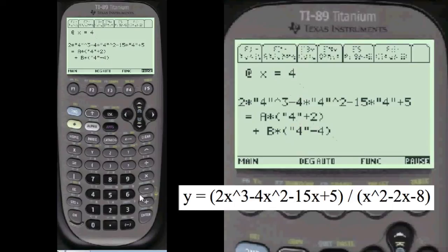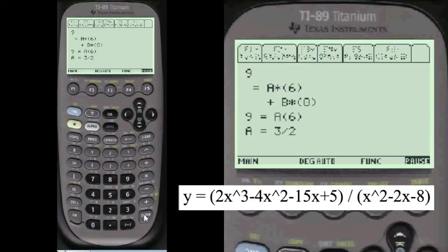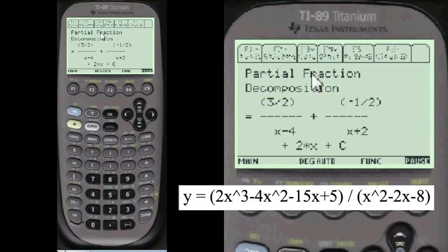And x equals 4. I do that for you. Amazing program, I think. A equals 3/2, 3 and 3 halves. Here's the answer. 3 halves over x minus 4 plus minus 1 half over x plus 2. Plus the, here's the quotient we found with short division plus C.